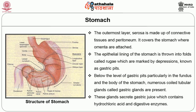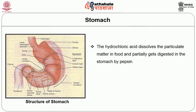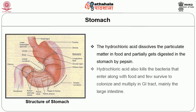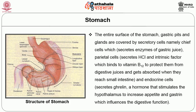Hydrochloric acid dissolves particulate matter in food, and protein is particularly digested in the stomach by pepsin. Hydrochloric acid also kills bacteria that enter along with the food, though a few survive to colonize and multiply in the gastrointestinal tract, mainly the large intestine. The entire surface of the stomach, gastric pits, and gastric glands are covered by secretory cells: chief cells, which secrete enzymes of the gastric juice; parietal cells, which secrete hydrochloric acid and intrinsic factor that binds to vitamin B12 to protect it from digestive juices until absorbed in the small intestine; and endocrine cells, which secrete ghrelin, a hormone that stimulates the hypothalamus to increase appetite, and gastrin, which influences digestive function.